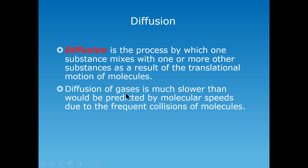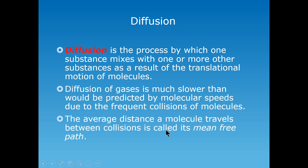The diffusion of gases is much slower than would be predicted by the molecular speed equation, and that is due to frequent collisions between molecules of different substances. We cannot use the root mean squared speed equation for calculations involving one substance mixing with another, because that equation assumes molecules are not colliding with and hindering each other. The average distance a molecule travels between collisions is called its mean free path, and that is not taken into account when calculating the root mean squared speed.